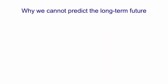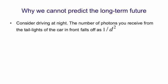I'm going to try and explain why we can't predict the long-term future by using an analogy. Imagine you're driving a car at night, and you're looking at the taillights of the car in front. The number of photons that you receive from the taillights of the car in front falls off as 1 over d squared, where d is the distance to the car in front.